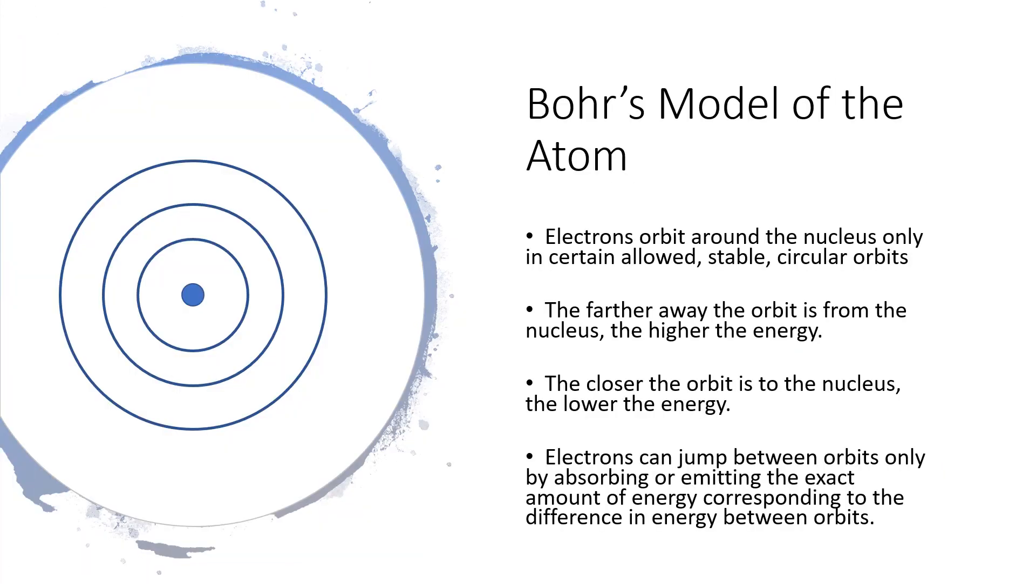So this is how Bohr would explain the spectra in terms of his model. At the center, that blue dot at the center of these circles, you have the nucleus and then all of the circles drawn around the nucleus illustrate the stable circular orbits. If you get to be really close to the nucleus, we're talking about a low energy orbit. And as you get further out from the nucleus, we're talking about a high energy orbit.